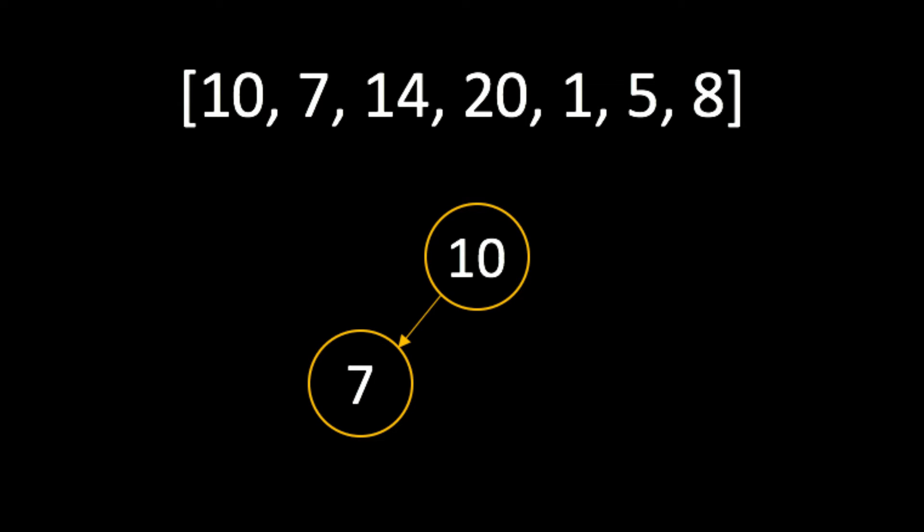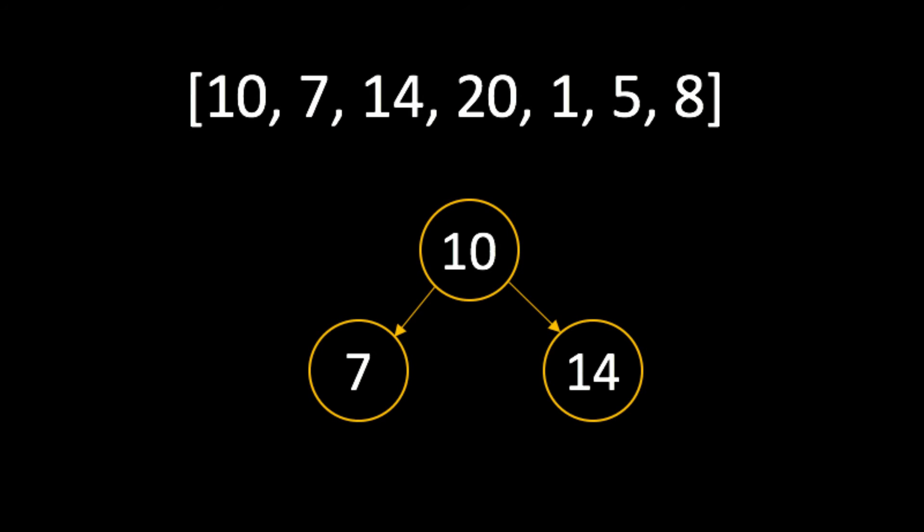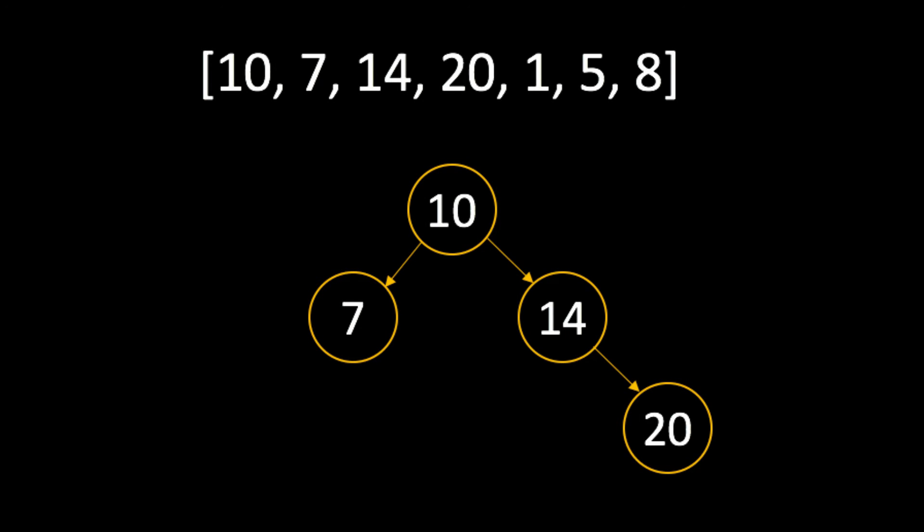Comparing the value of 14 to the root node of 10, we know that 14 is the right child. Making our way through the array, we come to the 20. We'll start with comparing the array to 10, which it's greater than.